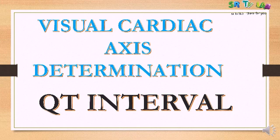You remember what cardiac axis is — it is the direction of ventricular depolarization. There is what we call normal cardiac axis and there is what we call abnormal. Abnormal may either be left axis deviation or right axis deviation. It can also be severe right axis deviation.